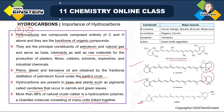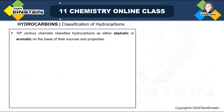From this discussion, we can understand how important hydrocarbon compounds are in our life. Classification of hydrocarbons: from a historical point of view, 19th-century chemists classified hydrocarbons as either aliphatic or aromatic. These two are broad classifications based on their sources and properties.